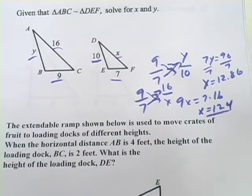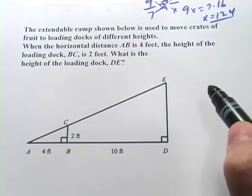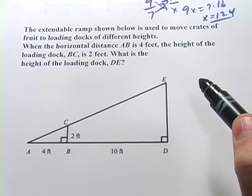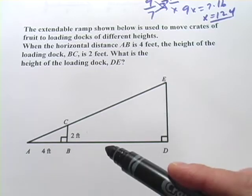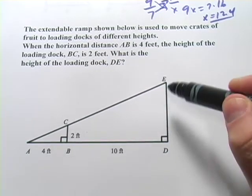All right let's look at another one here. This one is kind of a word problem. It says the extendable ramp shown below. So I guess this triangle represents a ramp and it can be extended this much or it could be extended all the way to here.